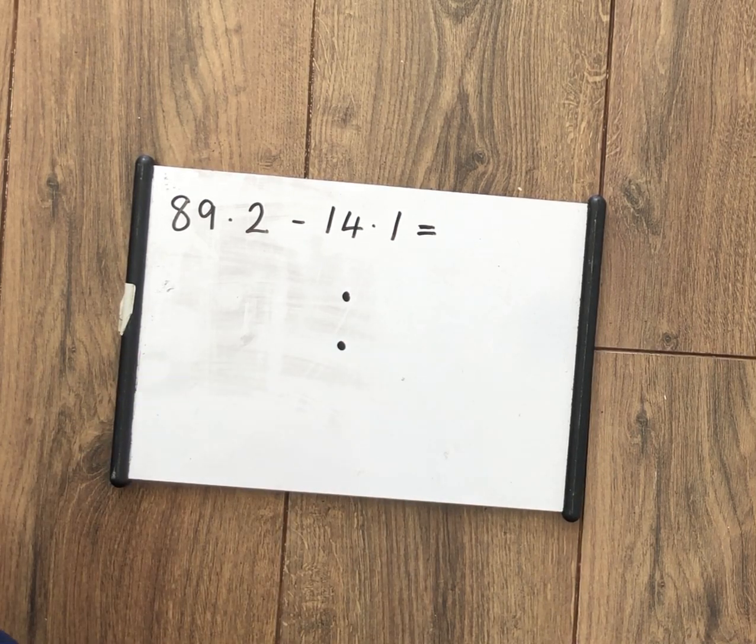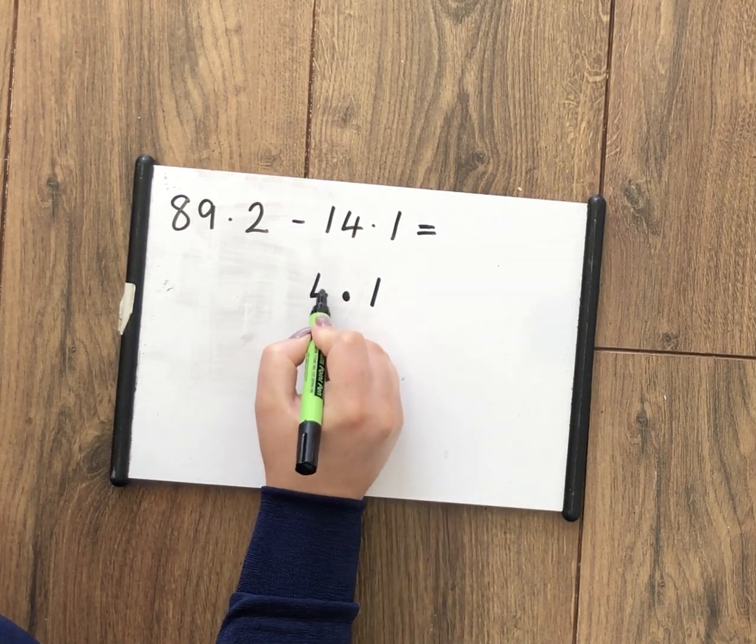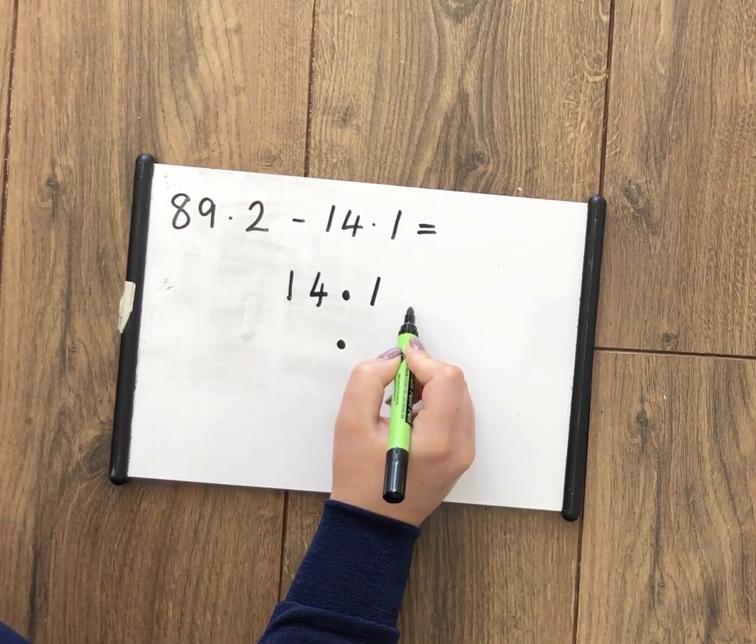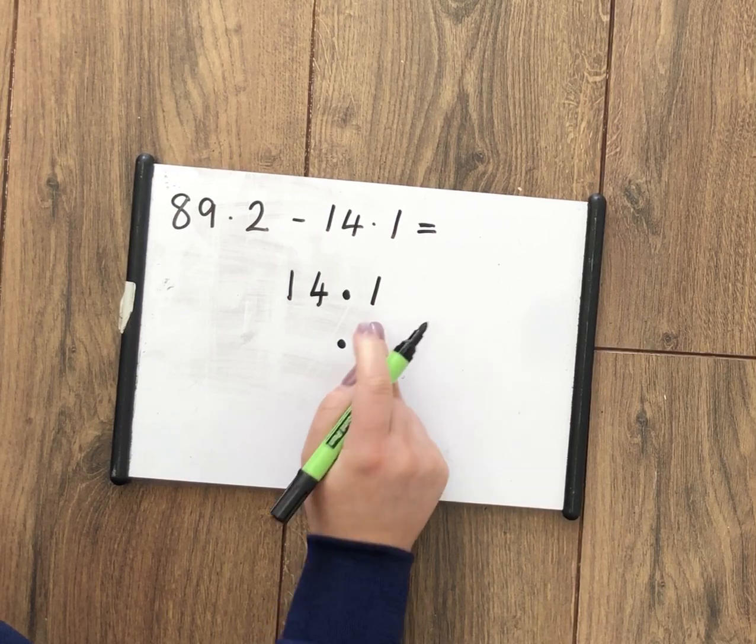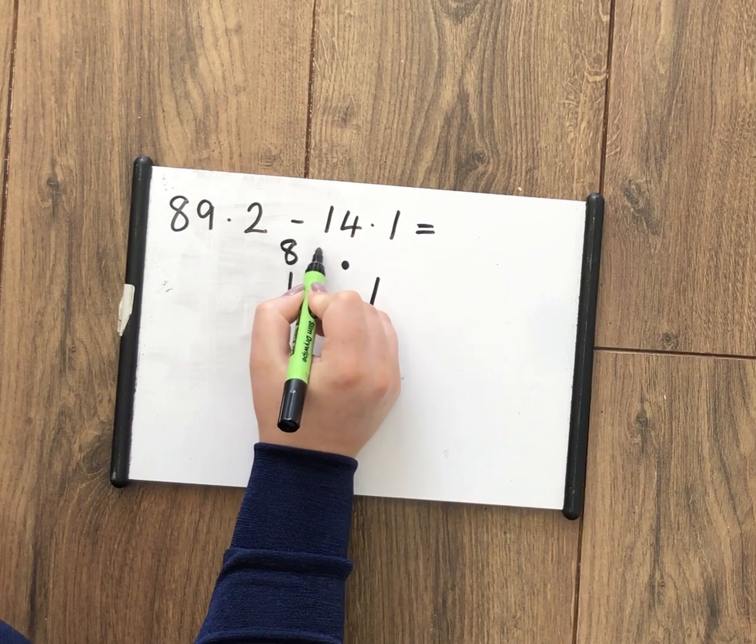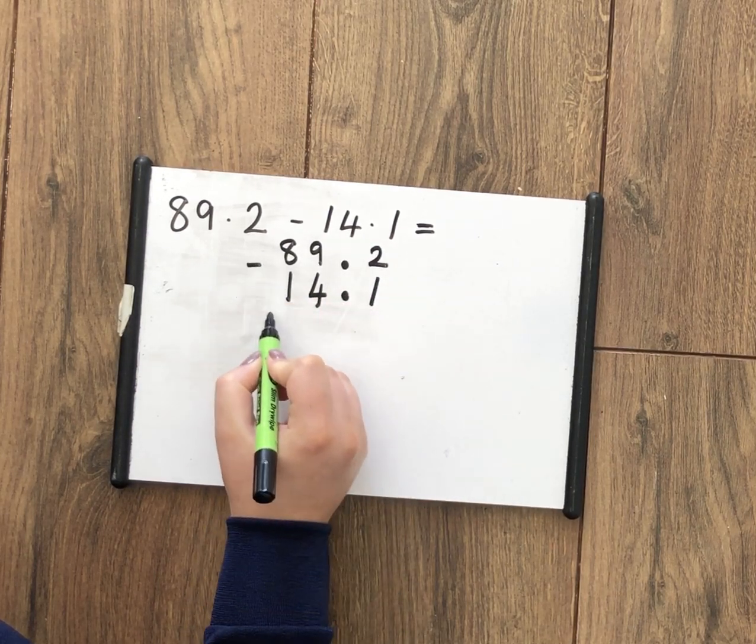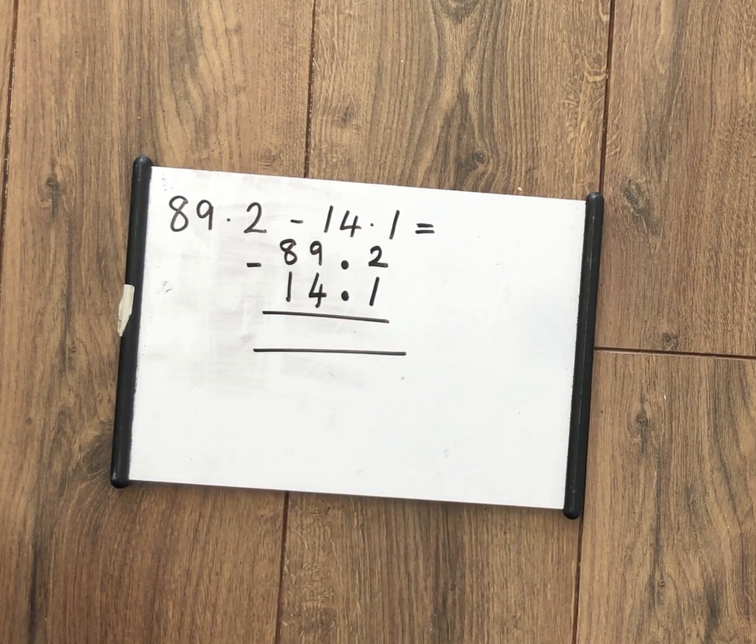So here I've got a 1, a 4, and a 1. 14.1 actually. And then the other one is 89.2. Okay, I know that's a subtraction.